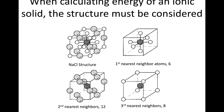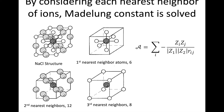Here is the equation for the Madelung constant — I've used a script A to define it, though you may see a different representation. It gives us the relationship between an isolated pair and a pair in a crystal. To calculate it, we perform a summation over all the different nearest neighbor shells up to where we stop the calculation. We use the same relative charges z_i and z_j that appeared in our bond equation.